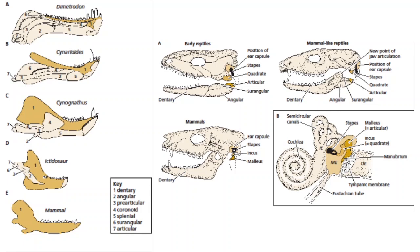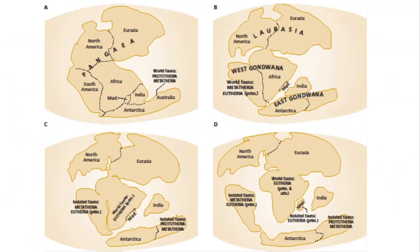Another important point is that in mammals the cochlea is coiled like a snail shell. Interestingly, in monotremes it is not coiled. So one of the features that illustrates the close affinity between monotremes and reptiles is the fact that the cochlea is not coiled.